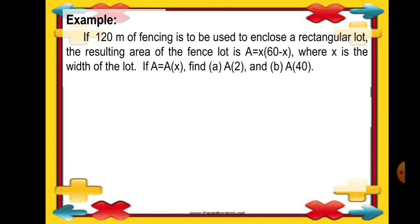If 120 meters of fencing is to be used to enclose a rectangular lot, the resulting area of the fenced lot is A equals x times the quantity of 60 minus x, where x is the width of the lot. If A is equal to A of x, find A of 2 and A of 40.